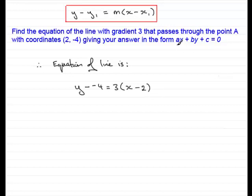Now, to get the equation of the line in this particular form, what I need to do is simplify what we've got. So, we've got y + 4 and now I'm going to expand the bracket and we have 3x - 6.